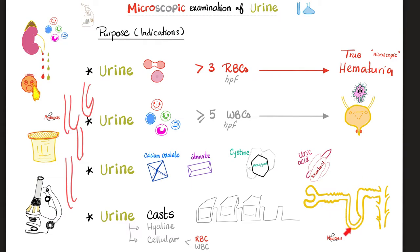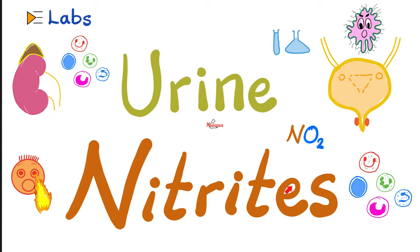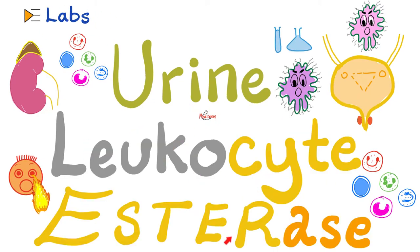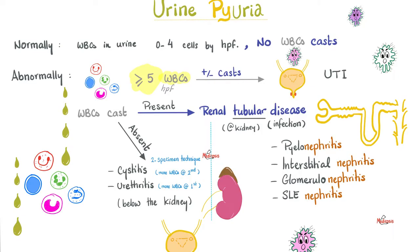We will need urine nitrites — they are positive in bacterial infection, and I've talked about this in a separate video. I also talked about urine leukocyte esterase in a separate video. Now, in urine pyuria: normally white blood cells should be 0 to 4 in the urine. But more than 5 white blood cells, we start thinking about urinary tract infection. If we also have white blood cell casts, we blame the kidney tubule — maybe pyelonephritis, interstitial nephritis, glomerulonephritis, or lupus nephritis.